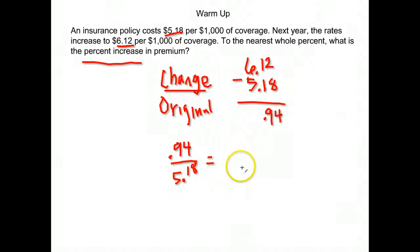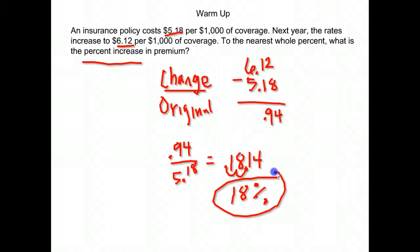So I go ahead and divide 0.94 divided by 5.18 gives me 0.1814 and it goes on from there. We want to write this decimal as a percent so we move the decimal two places to the right and we get 18.14 but it wanted it to the nearest whole percent. So we don't need that .14 on the end. We end up with just 18 percent.